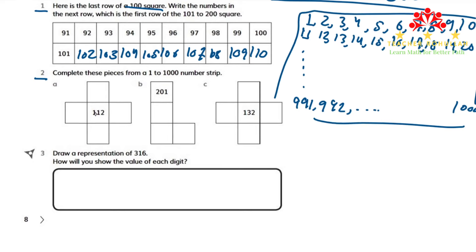So if 112 is here, so above 112, we will have 102. And to the left of 112, we will have 111. To the right, we have 113. And under 112, we have 122. We are done with part A.